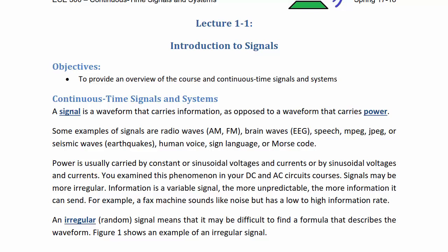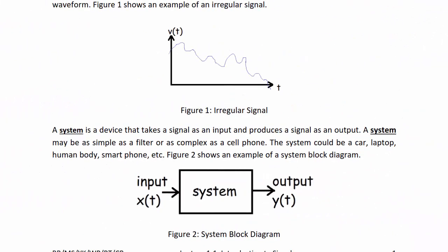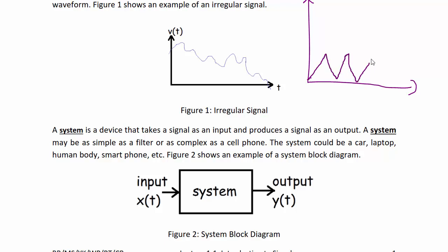An irregular or random signal means that it may be difficult to find a formula that describes the waveform. Figure 1 shows an example of an irregular signal — there's no set pattern, and you cannot have a set period. Compare it to a signal that has a regular pattern, such as a triangle wave, that would have a set period.